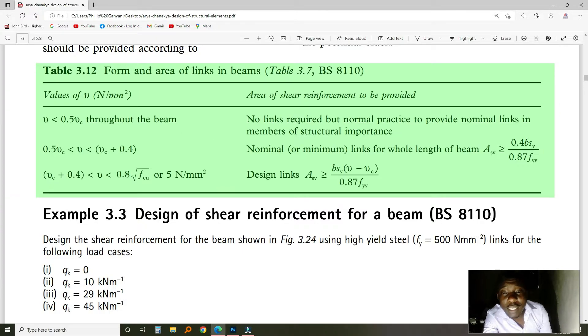Then, no links required, but nominal, practical to provide nominal links. This only means that you provide links for hanger bars. Hanger bars are the top reinforcement that you'll be putting at the top there. So, for them to be supported and to suspend, they need hanger bars. Now, if you've got a value that is above 0.5V, when this value V is greater than this number, but less than V plus 0.5, you use nominal links, you use this equation here.